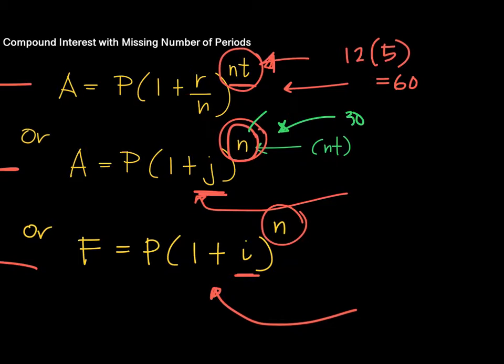Well, it depends, again, on the number of times the interest is compounded. If it's 12 times in a year, then the number of years for the 30 periods is 30 divided by 12.